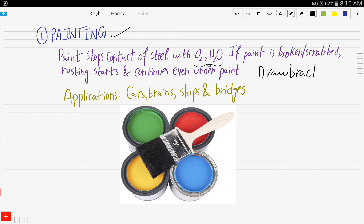That's the drawback of paint: if it's broken or scratched, rust would start even below the paint. Some applications of painting include cars, trains, ships, and bridges—the structures of cars, trains, and ships. So it has a wide range of applications.